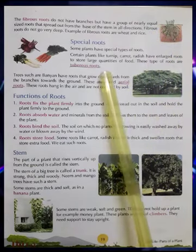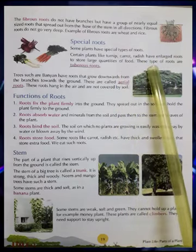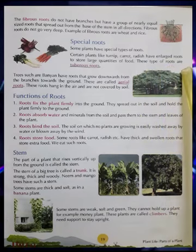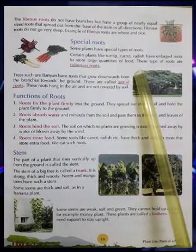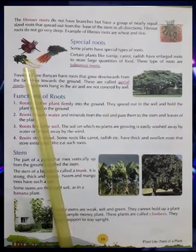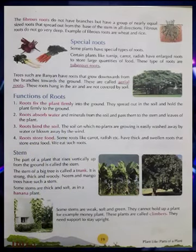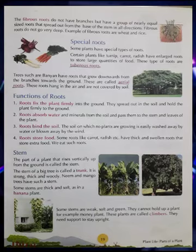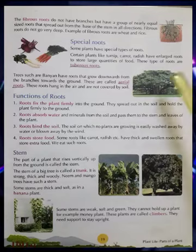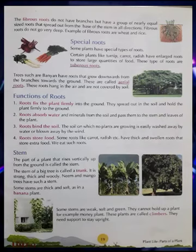Special roots — some plants have special types of roots. Certain plants like turnip, carrot, and radish have enlarged roots that store large quantities of food. These types of roots are called tuberous roots. Trees such as banyans have roots that grow downwards from the branches towards the ground; they are called aerial roots. These roots hang in the air and are not covered by soil.